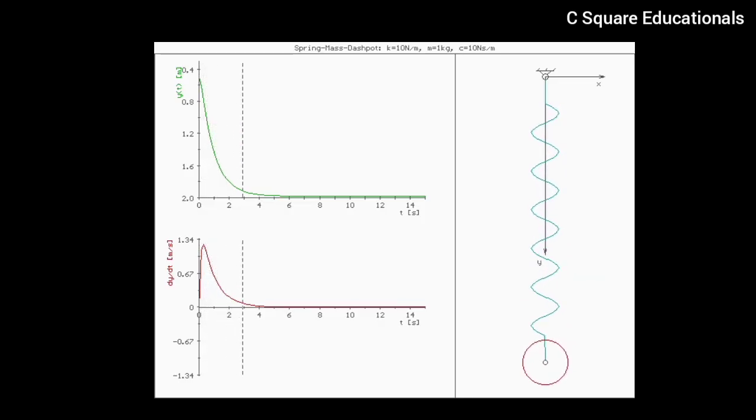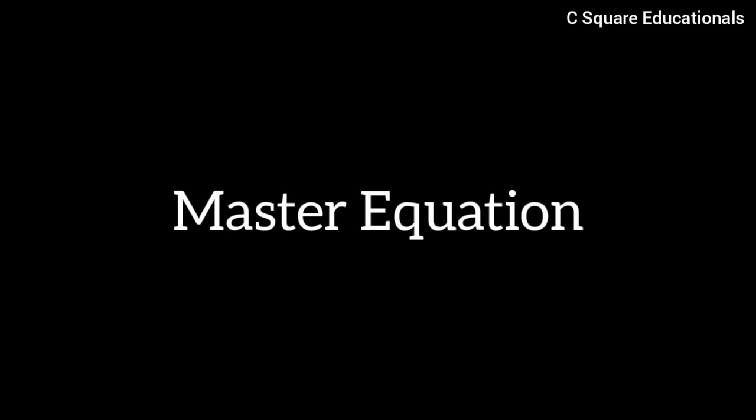In the case when the Fokker-Planck equation contains second partial derivatives with respect to all spatial variables, the equation can be written in the form of a master equation that can easily be solved numerically.